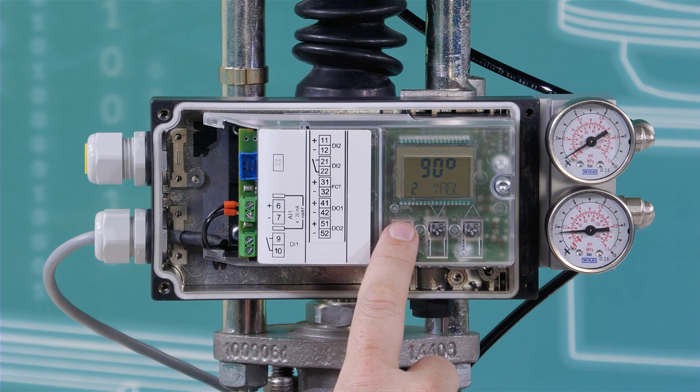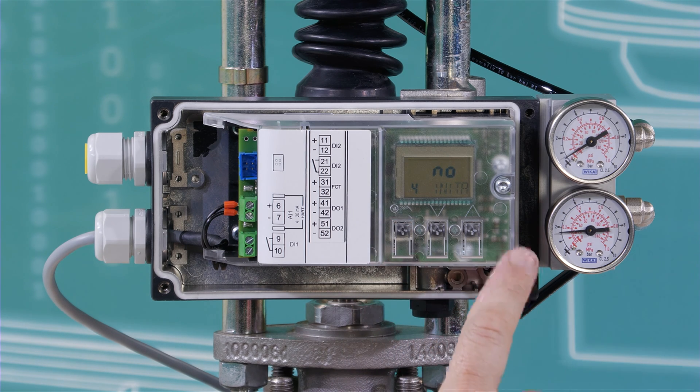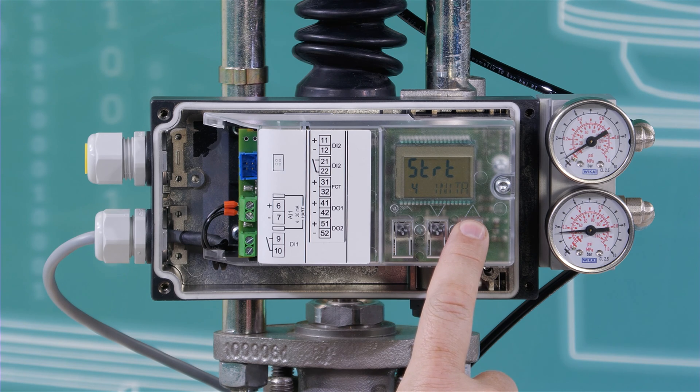To start the initialization, switch to parameter 4 INIT A and push the PLUS button for several seconds. Now the positioner will perform the initialization.